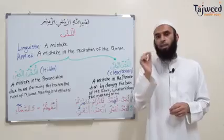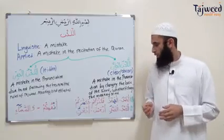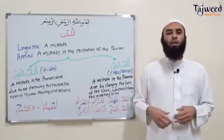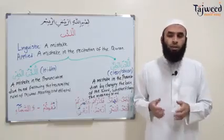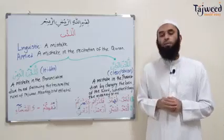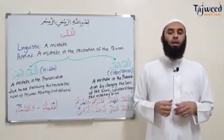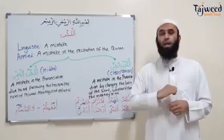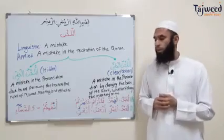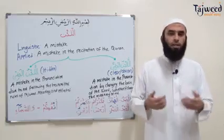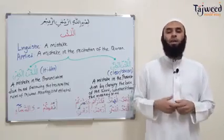If we change a حركة and it changes the meaning, this mistake is even more serious. For example: صِرَاطَ الَّذِينَ أَنْعَمْتَ عَلَيْهِمْ — Guide us to the path that You, Allah, are pleased with. If someone says أَنْعَمْتُ, changing the فتحة to a ضمّة, it means 'the path that I am pleased with.' If they say أَنْعَمْتِ, they are referring to Allah with a feminine pronoun. Another example: اهدِنَا الصِّرَاطَ الْمُسْتَقِيمَ means guide us to the straight path. If someone says أَهدِنَا, from هدية meaning a gift, it becomes 'give us a gift in the straight path.'